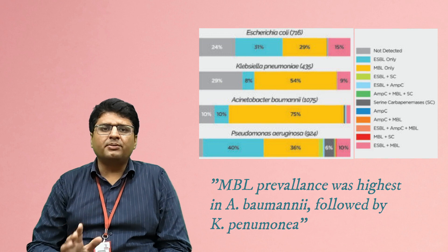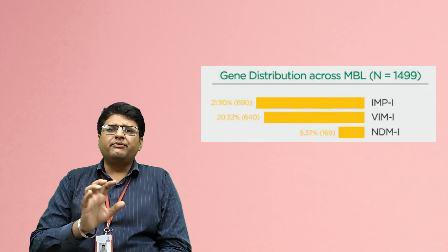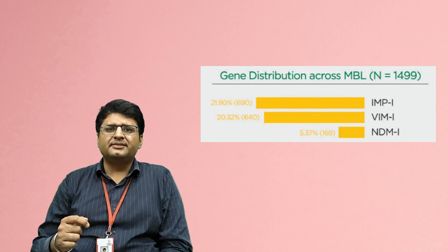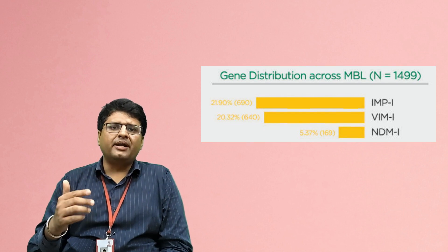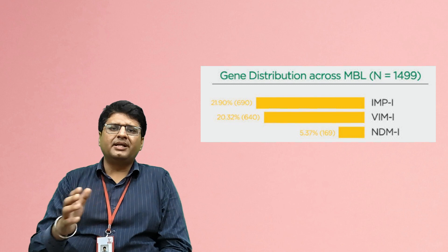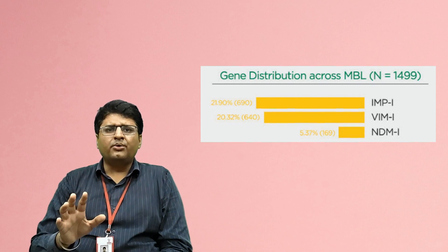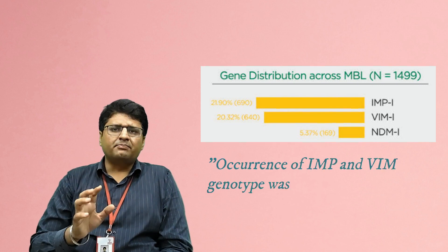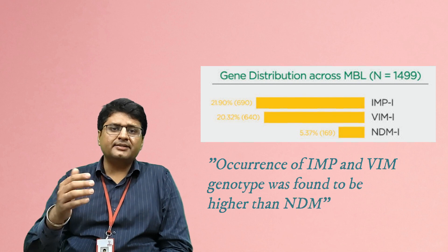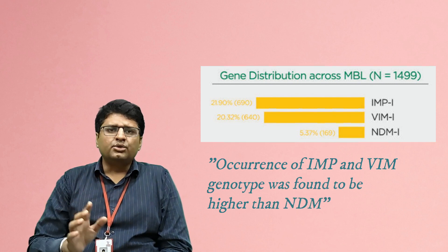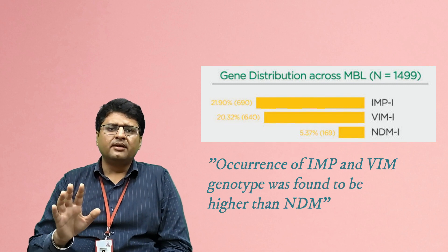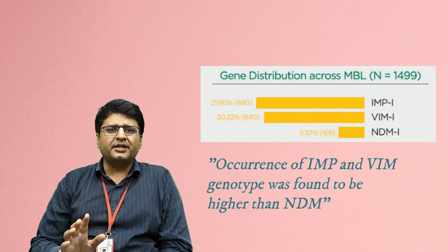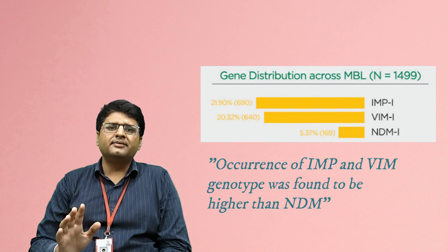MBL production in Acinetobacter baumannii was 78% and in Klebsiella was 54%. Different types of MBLs include NDM, IMP, and VIM. This abstract reported that IMP prevalence was highest, followed by VIM and then NDM — contrary to the general assumption that NDM-producing enzymes are most prevalent in India.